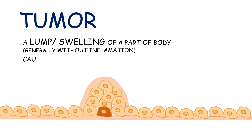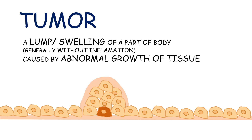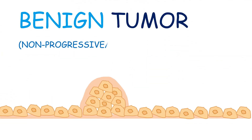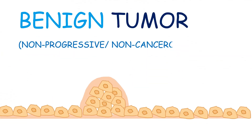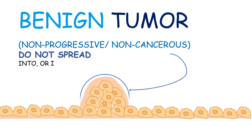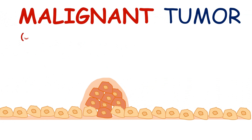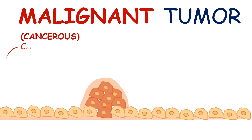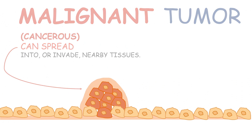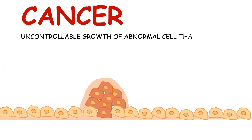A tumor is a term used for a lump or swelling of a part of the body that generally does not involve any inflammation and is caused by an abnormal growth of tissue. It has two types: a benign tumor, which is non-progressive and non-cancerous and does not spread into or invade other parts of the body, while a malignant tumor is cancerous and can spread into or invade nearby tissues.